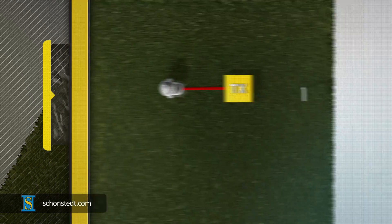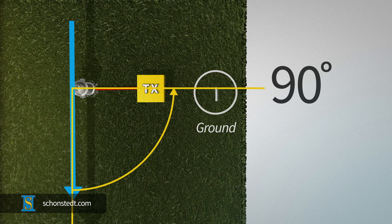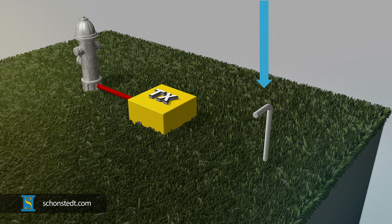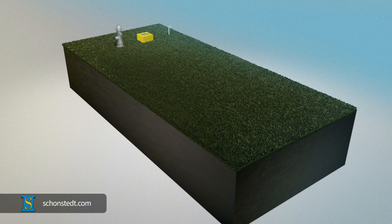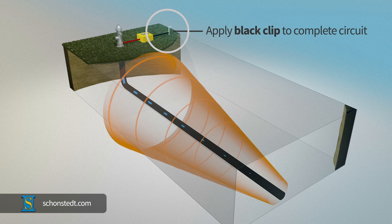Next, position a ground stake as close to 90 degrees as possible to the anticipated line location path. Press the stake deep into the ground to increase surface contact with the soil. Once the ground stake is in position, apply the clip attached to the black cable to the ground stake to complete the circuit.